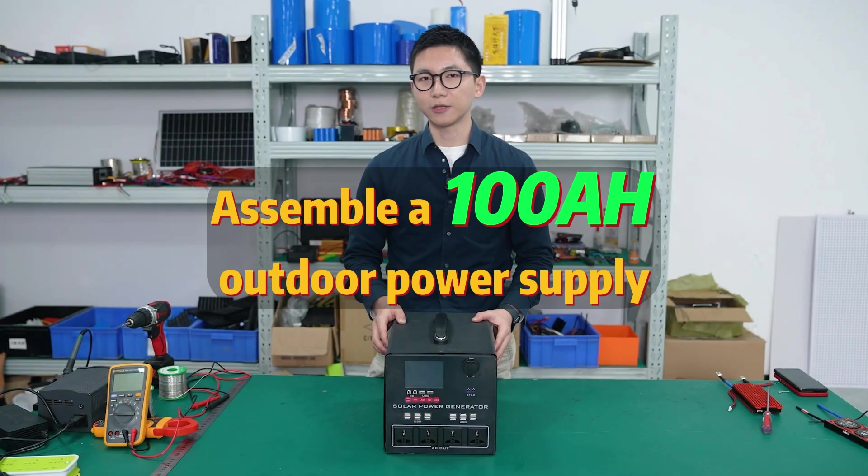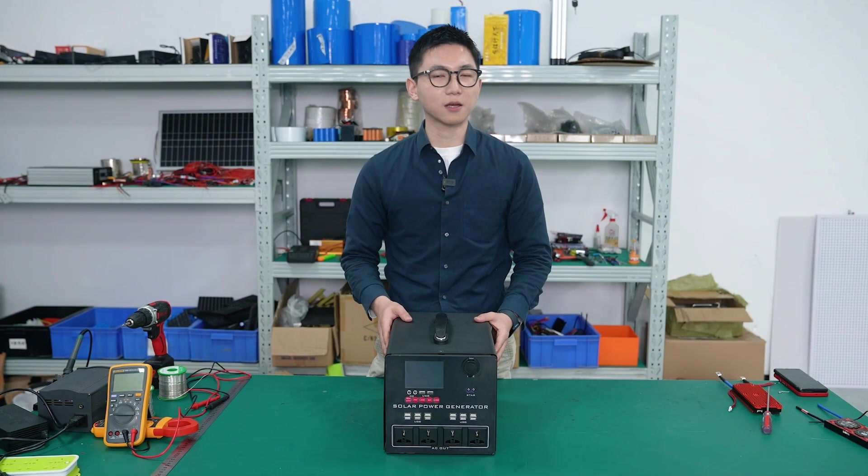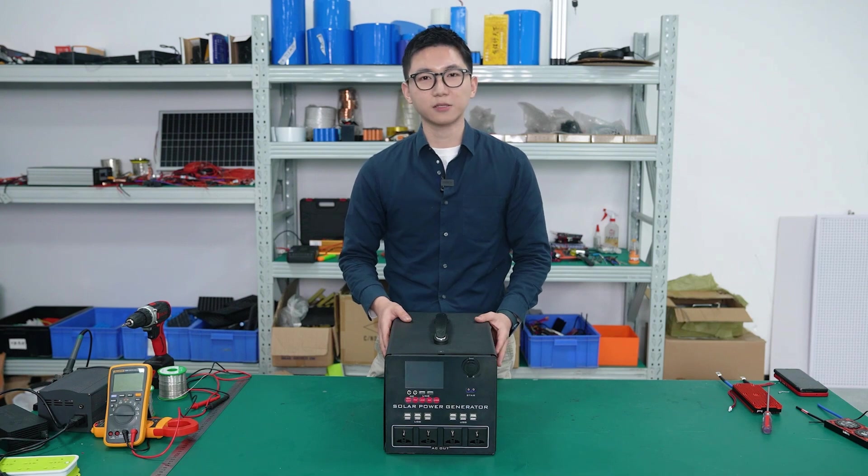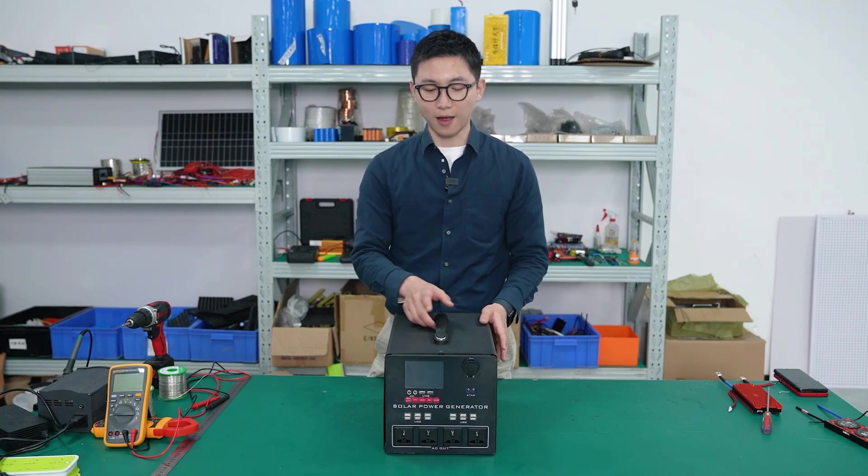This is the case of an outdoor power supply. Today we are going to make a battery group that consists of 100Ah capacity for it. So let's take it back to look what's inside.